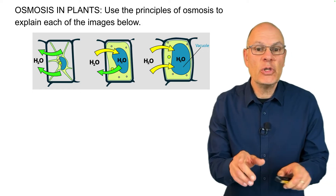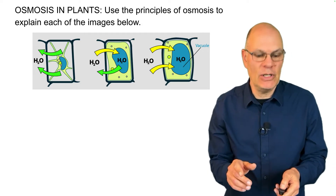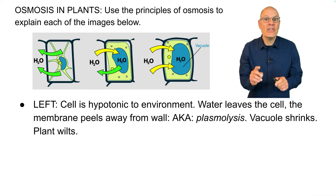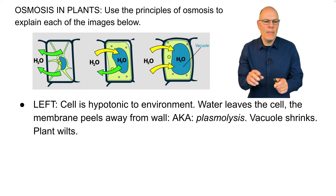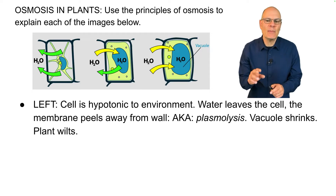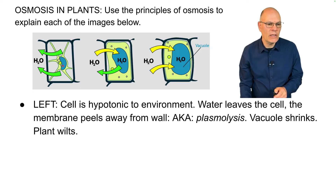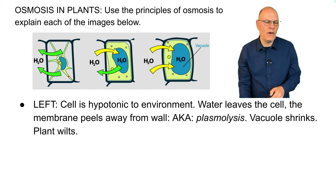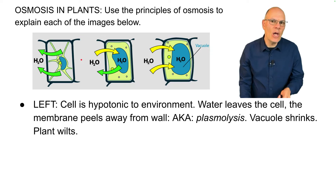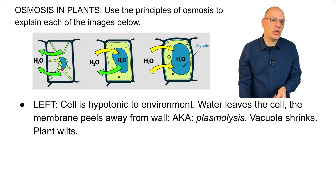Osmosis in plants: use the principles of osmosis to explain each of the images below. On the left side, the cell is hypotonic to the environment, so water leaves the cell. The membrane peels away from the wall — that's also known as plasmolysis. The vacuole shrinks and the plant wilts. For the environment to be hypertonic to the cell, it needs a lot of solutes dissolved in it so that it has a lower water concentration than the cytoplasm, causing water to leave the cell.